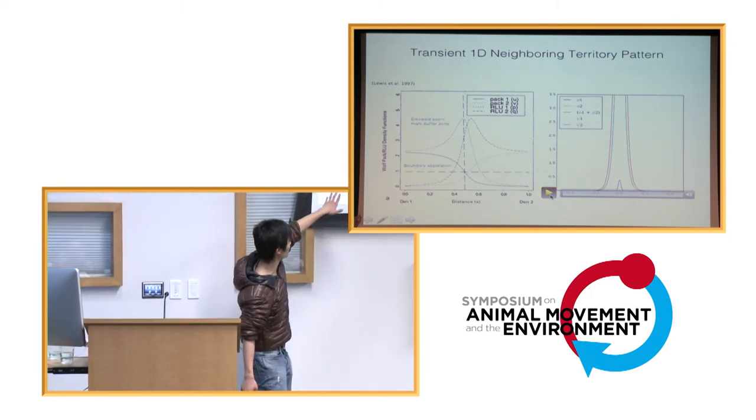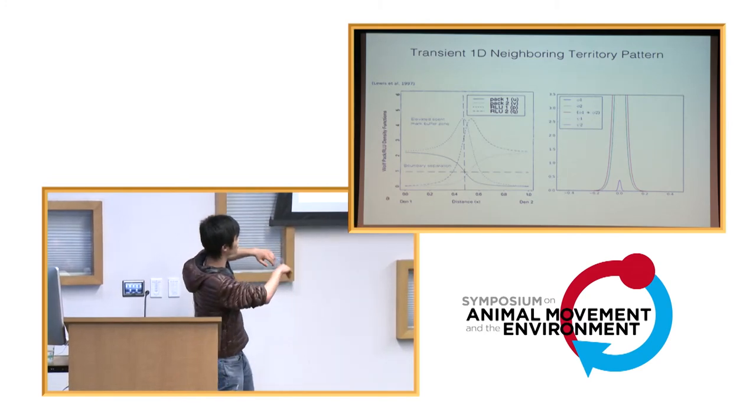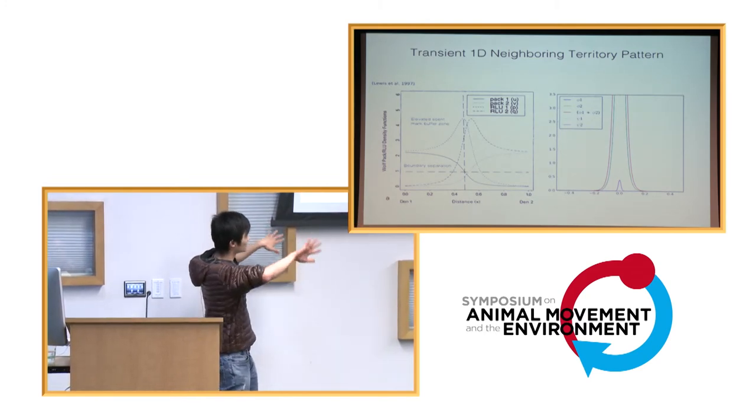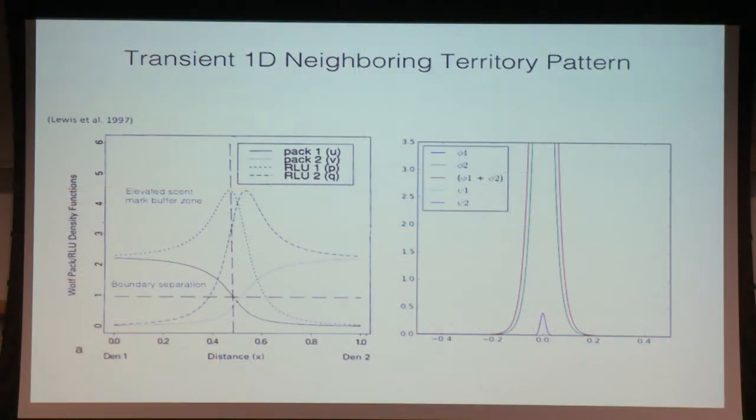So, basically, what you see on the left-hand side here, this is a steady-state solution. You basically have boundary separations between the neighbors, so you have a dip in terms of the individual space use. But at the same time, that dip is only established by this buffer zone due to increased scent marking in that area.